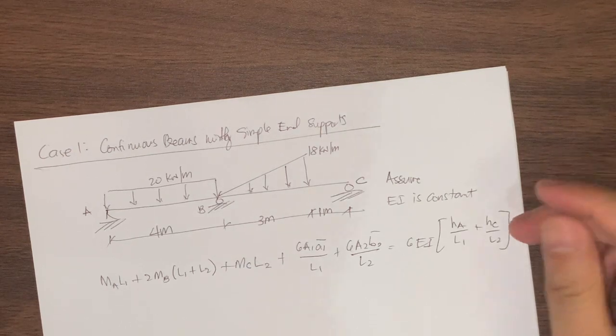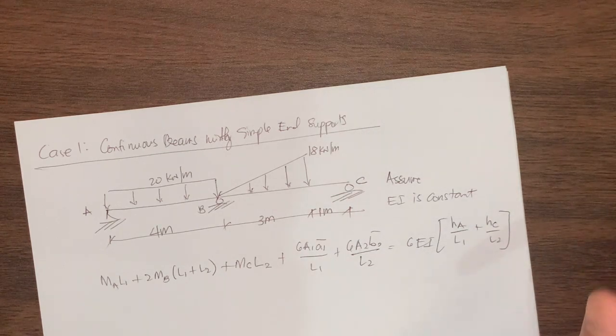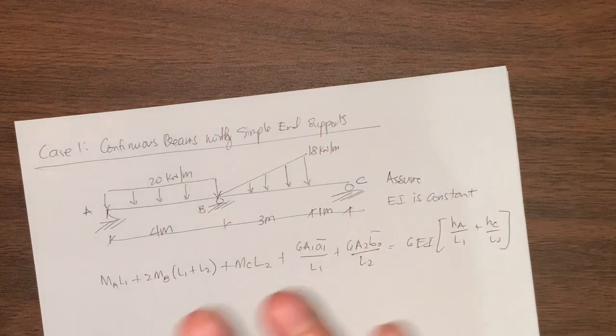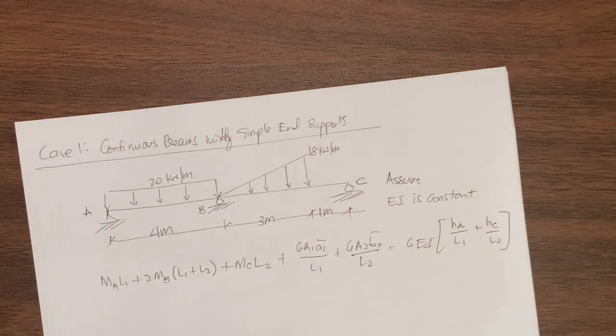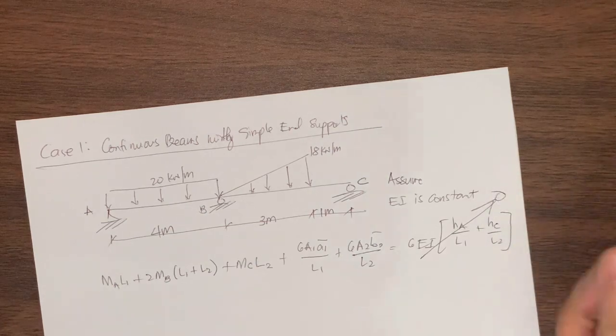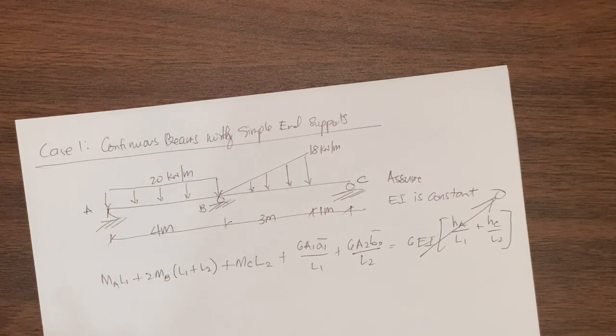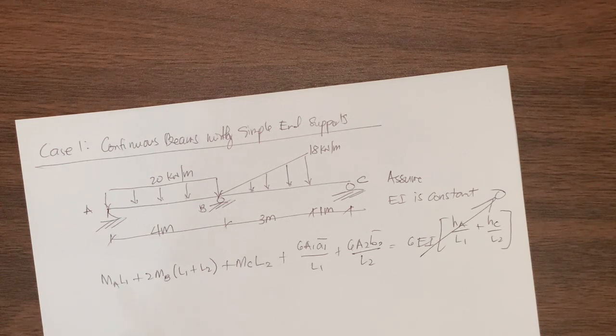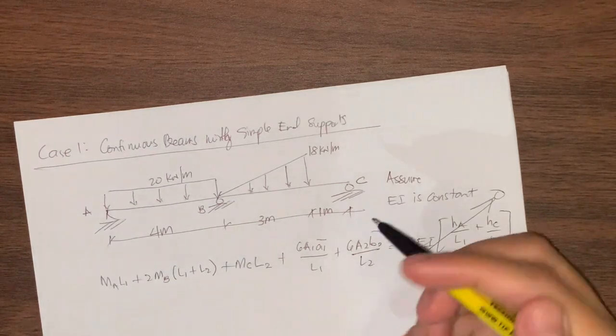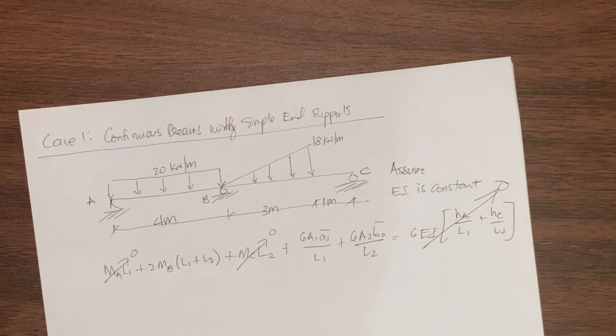A and C are actually the vertical distance of points A and C with respect to point B. In this case, there is no given settlement at point A and point C, same with point B. So we are to assume that they are of the same elevation or same level. In that case, HA and HC are considered to be zero. Also, since we have simple end supports, we know that if we have the end support which is a hinge or a roller, the moment at that point is zero. MA is automatically zero and MC is also zero.